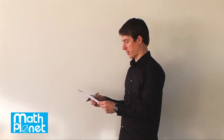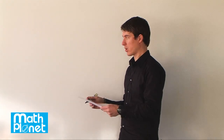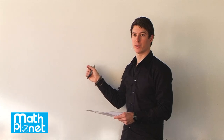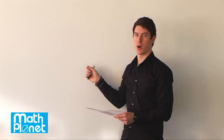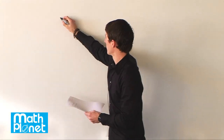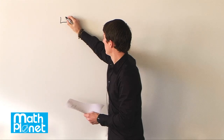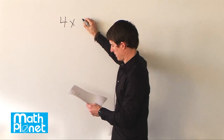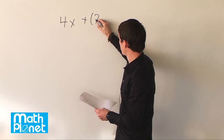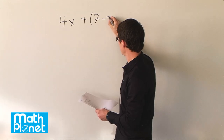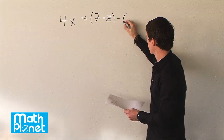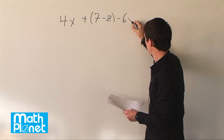Here we have an algebraic expression that we want to evaluate for different values of x, y, and z and see what we get. The expression is 4x plus the quantity 7 minus z, minus 6y.